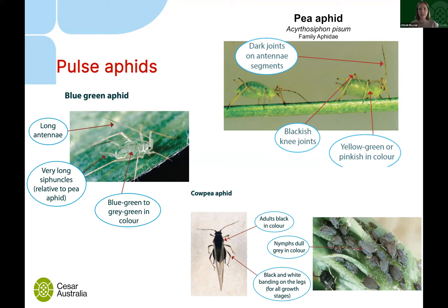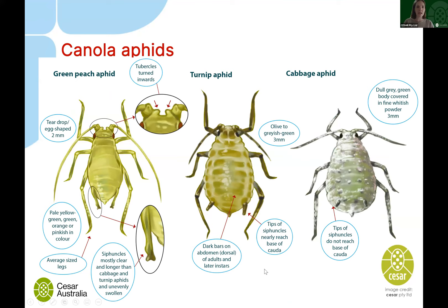Moving on to pulse aphids: we have three quite different-looking species — blue-green aphid, cowpea aphid, and pea aphid. Blue-green aphids have very long antennae, very long siphuncles, and a blue to grey-green colour. Cowpea aphids are quite distinctive — adults are almost black, nymphs are a dull grey, and they have white banding on the legs. Pea aphids have funny black knee joints compared to the blue-green aphid, and are a slightly different colour.